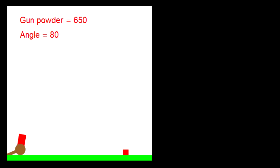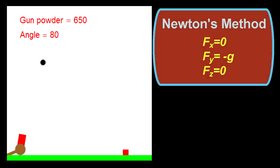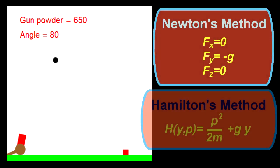Say you want to describe the motion of a cannonball shot across the field. With Newton's method, you would begin by writing the force on the cannonball. But with Hamilton's method, you would begin by writing a formula for the total energy of the cannonball as a function of its momentum and height above the ground.